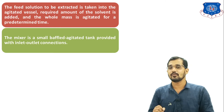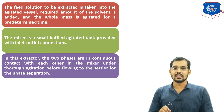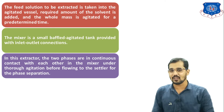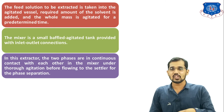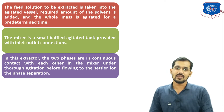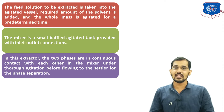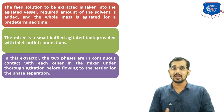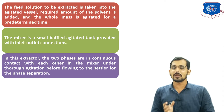In the Mixer-Settler, two phases are in continuous contact with each other in the mixer under thorough agitation before flowing to the settler for phase separation. Before separation into the Extract and Raffinate phases, all phases are in continuous contact in the mixer. The outlet stream from the mixer is transferred to the settler where we get two outlet streams: the Extract phase and the Raffinate phase. The required component, solute C, is present in larger composition in the Extract phase, though some amount also remains in the Raffinate phase since no process is 100% efficient.